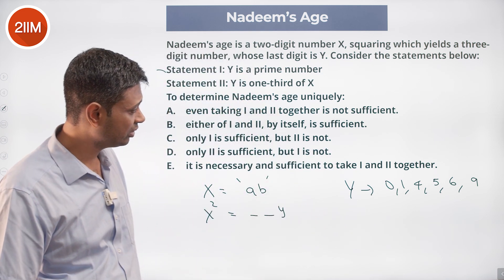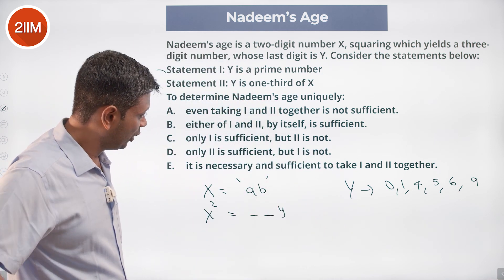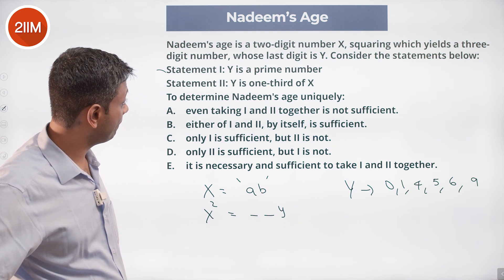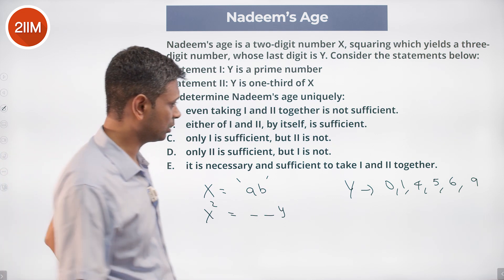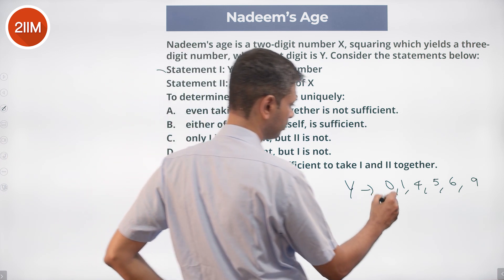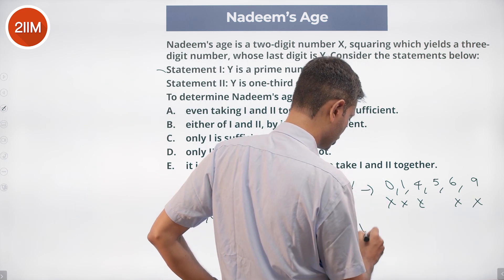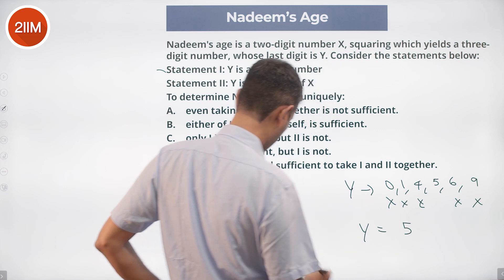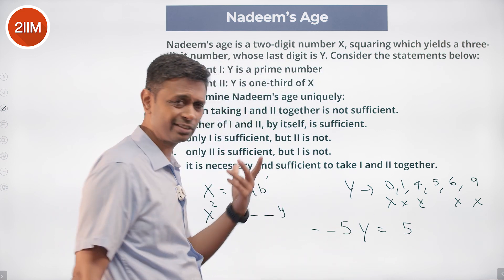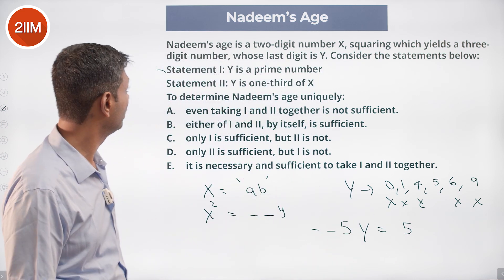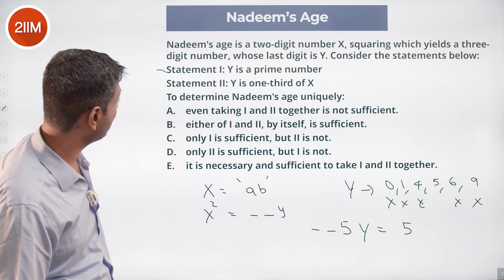These are the possible ending digits. Now we know Y is a prime number, so Y must be 5 — brilliant! Because 0, 1, 4, 6, and 9 are not prime. So our squared number is dash-dash-5. Nice and brilliant. We know the last digit, but we want to find Nadeem's age, which is X.